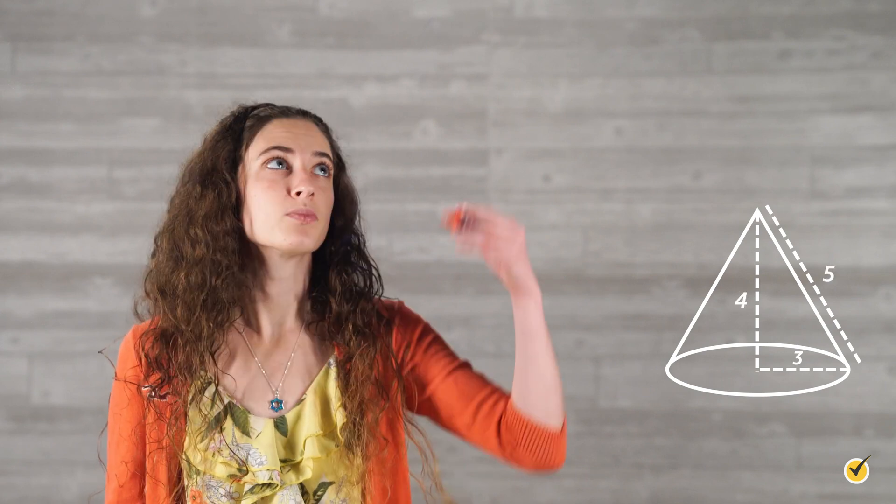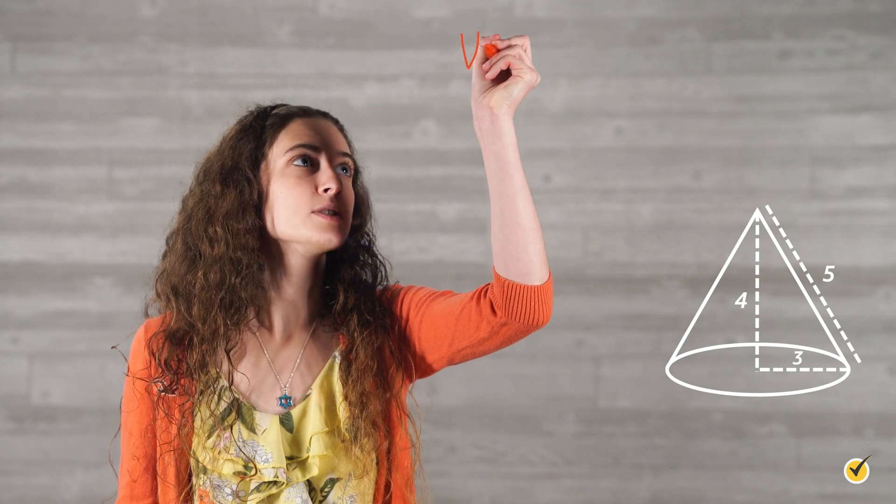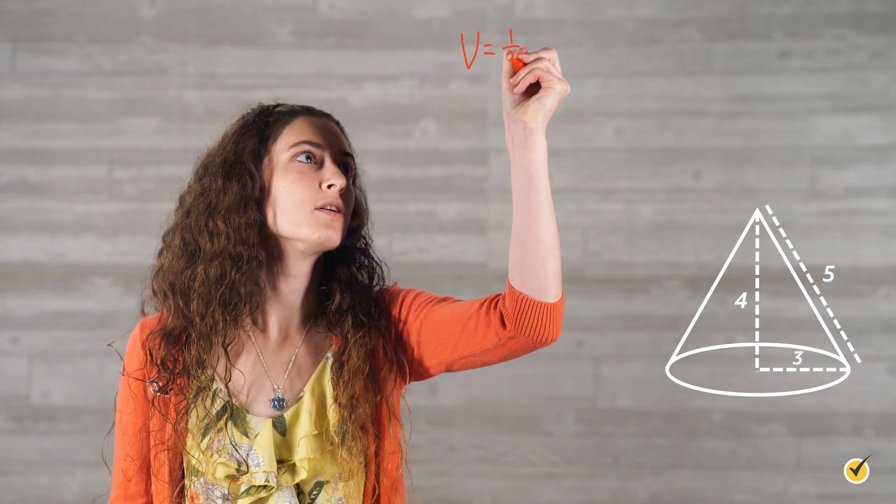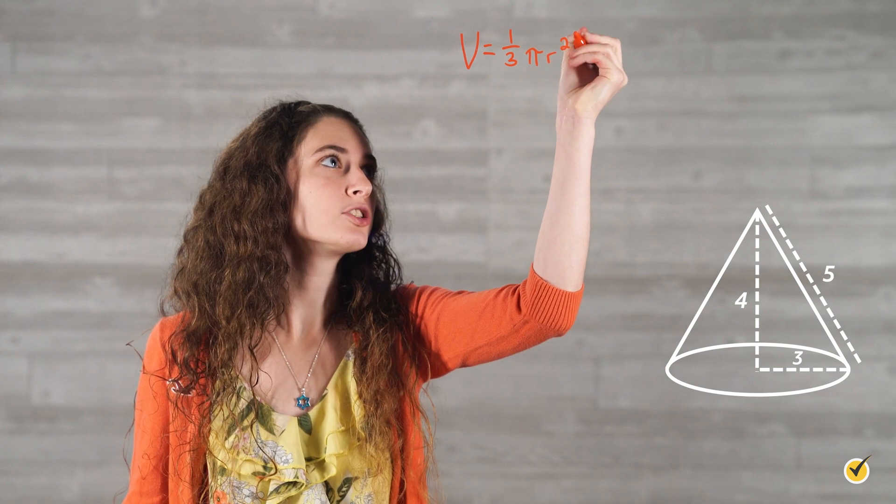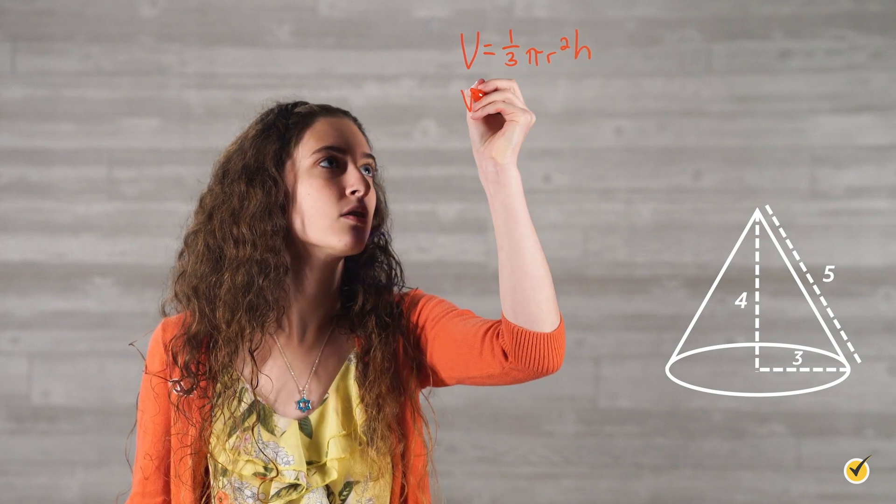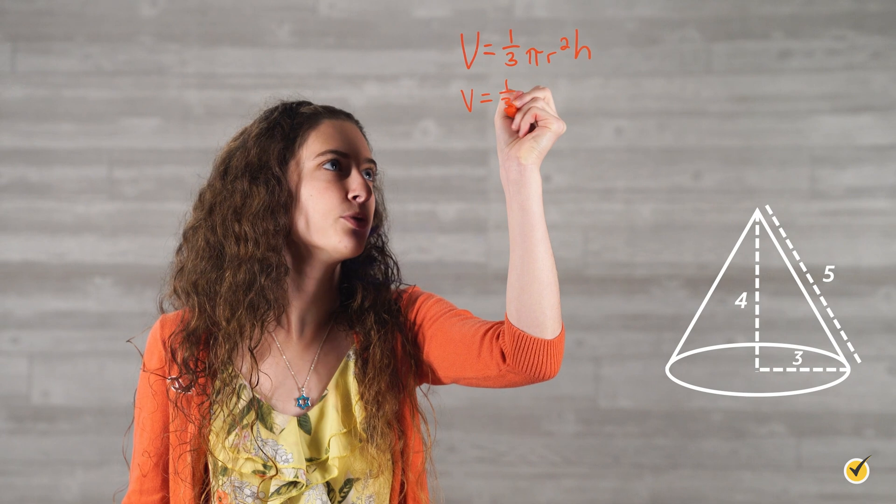First, let's find its volume. Volume is equal to one-third pi r squared h. We're going to rewrite this formula.